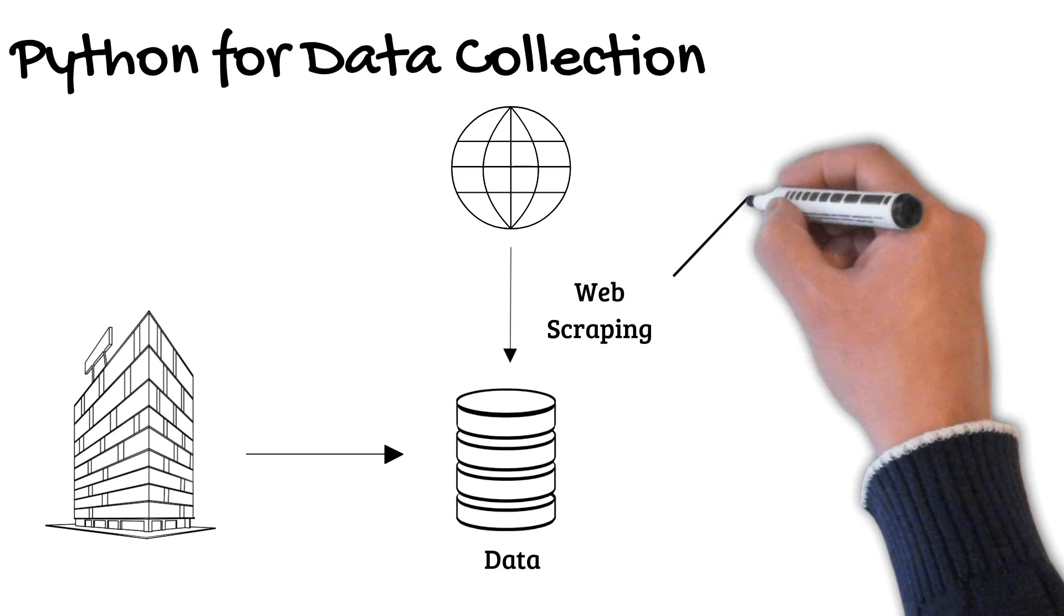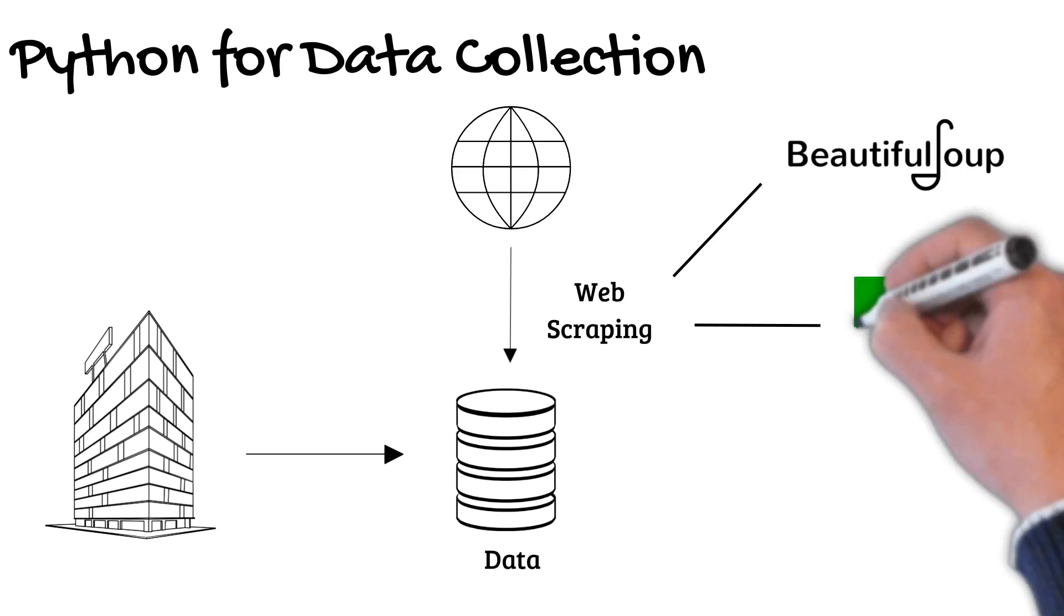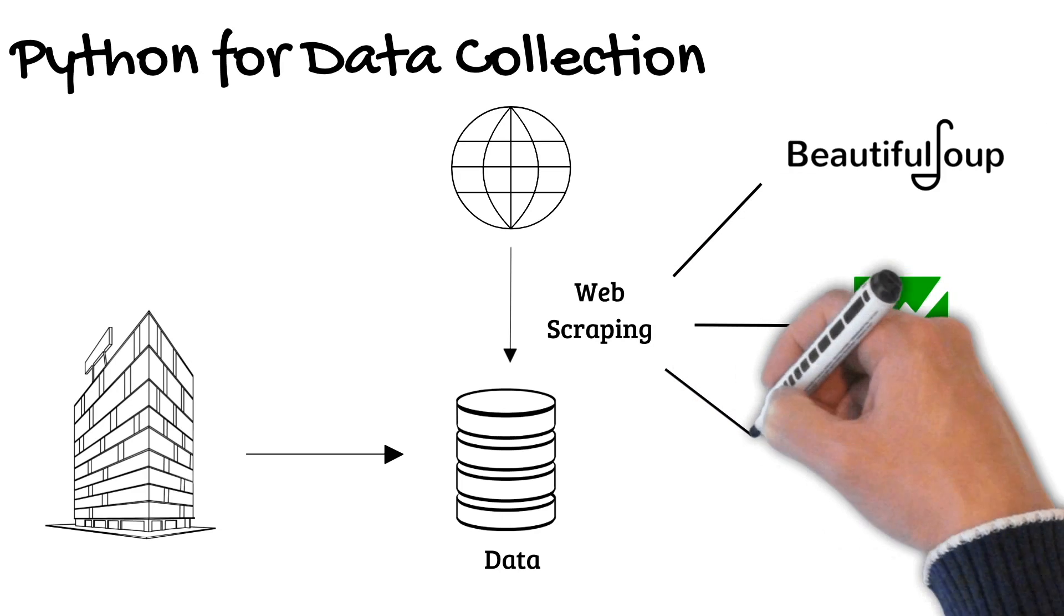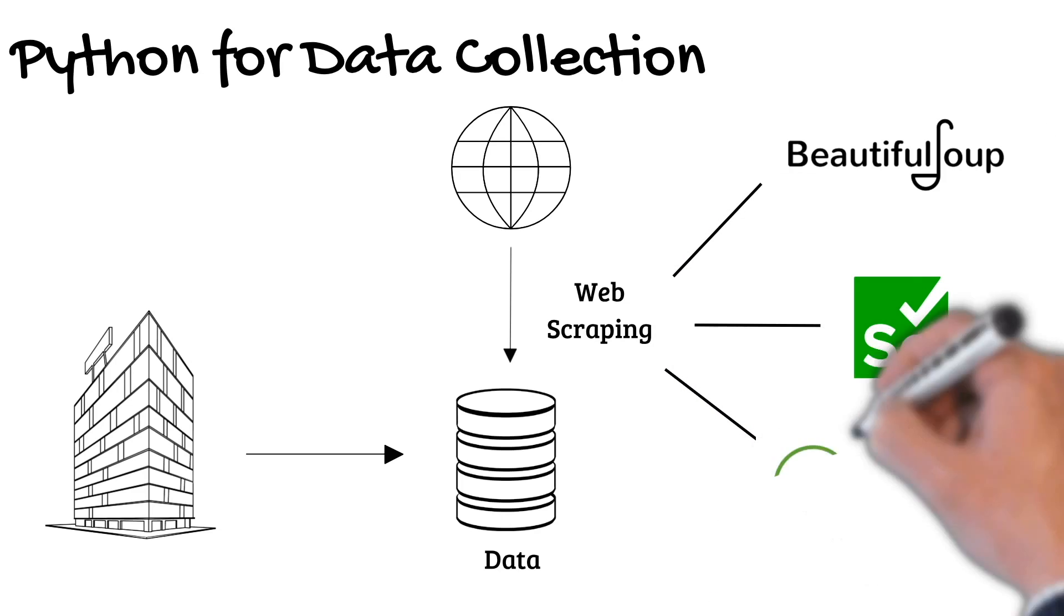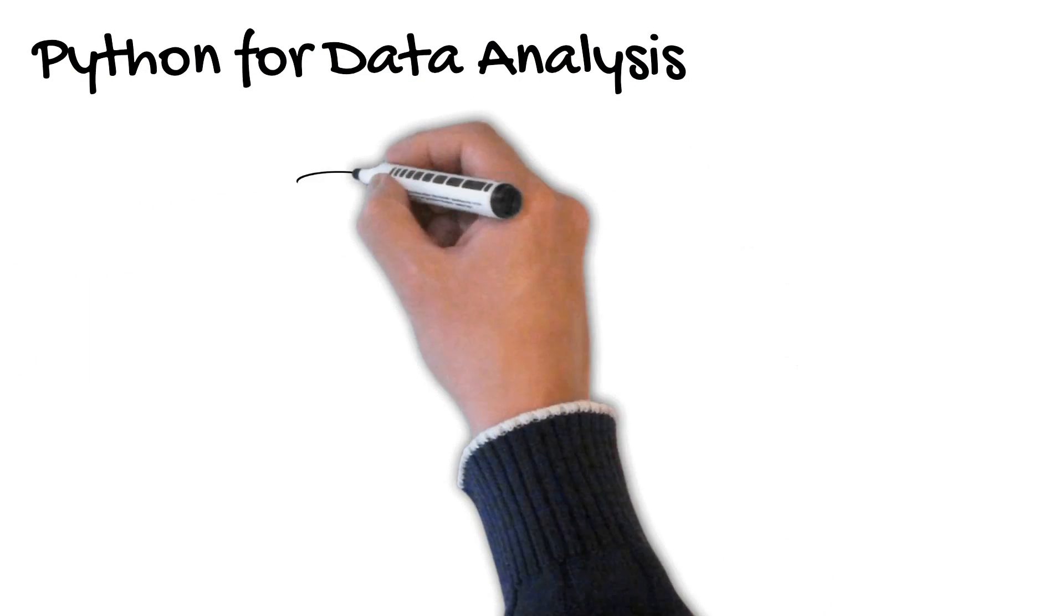Web scraping allows us to automate that extraction by using bots and spiders. Some of the Python libraries used in data science are Beautiful Soup, which doesn't support JavaScript rendering websites but is easy to learn; Selenium, which can scrape dynamic websites but is slow; and Scrapy, which is the most complete option.